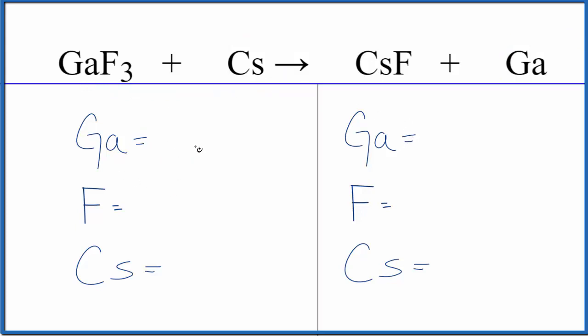To balance the equation, let's count up the atoms on each side. One gallium, three fluorines, and one cesium. Product side, we have one gallium, one fluorine, and one cesium.